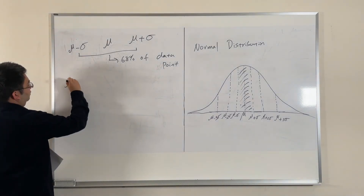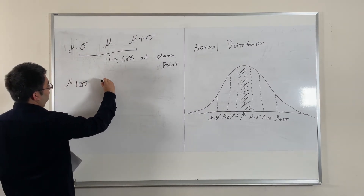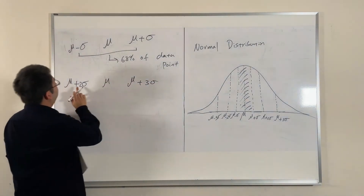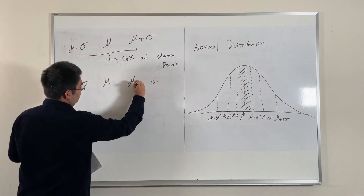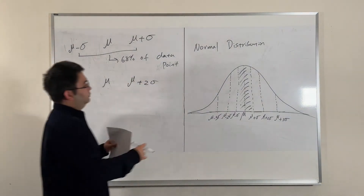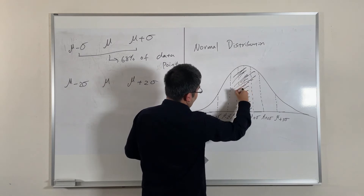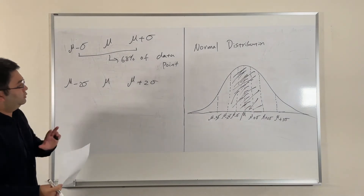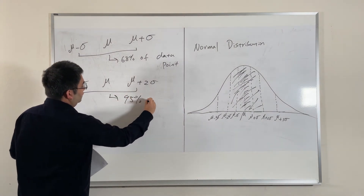Next, let's expand the range. Looking at mu minus 2 standard deviations to mu plus 2 standard deviations — this bigger range — the rule of thumb says this covers 95% of the data points.